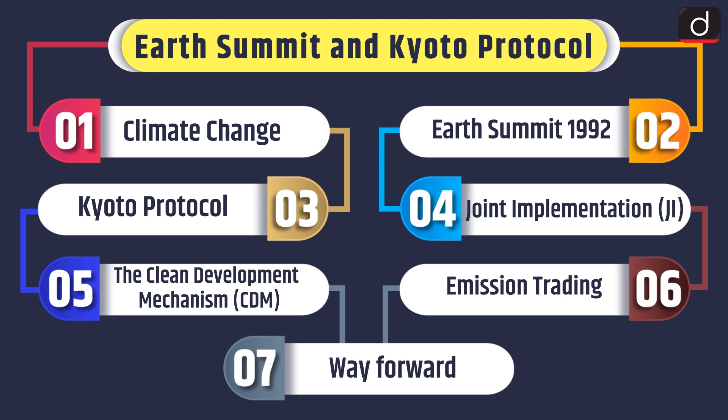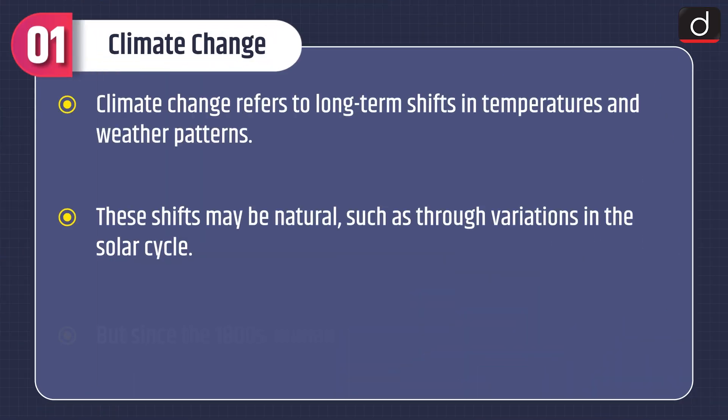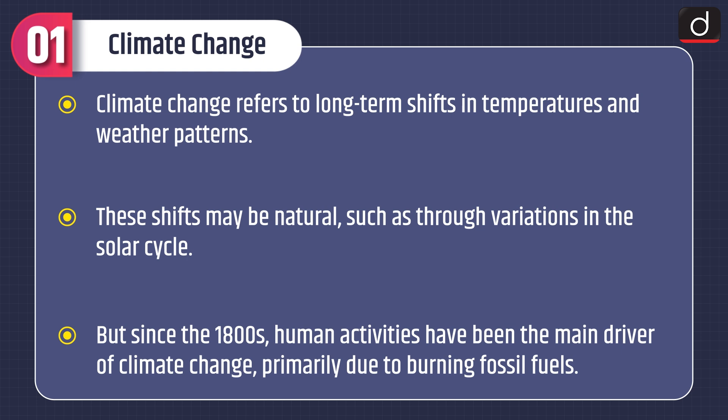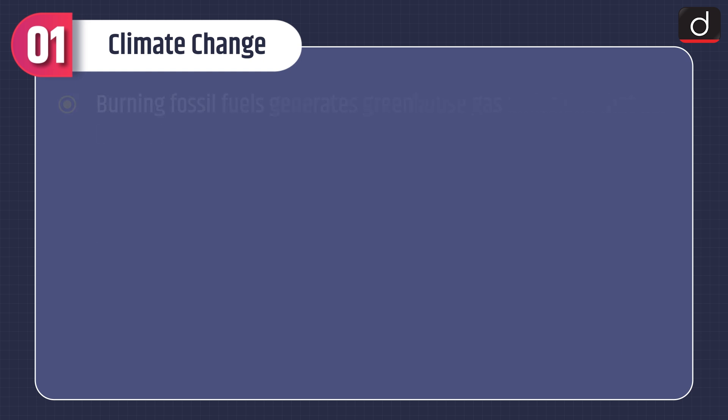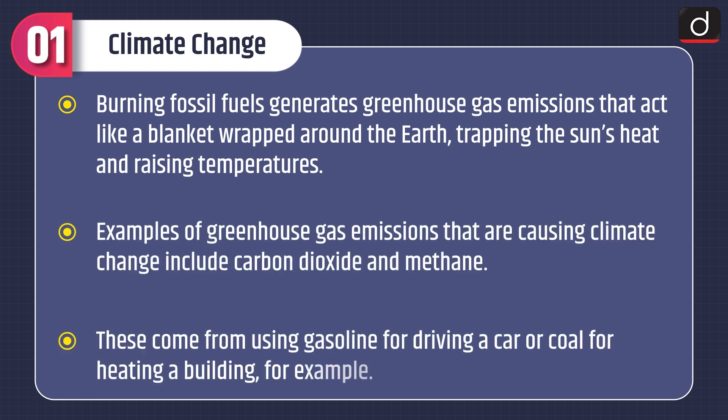First, let's discuss what is climate change. Climate change refers to long-term shifts in temperatures and weather patterns. These shifts may be natural, such as through variations in the solar cycle, but since the 1800s human activities have been the main driver of climate change, primarily due to burning fossil fuels.